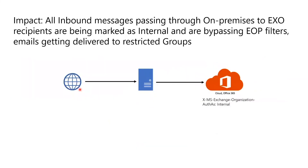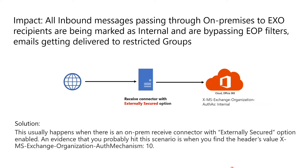Our next problem is inbound email from the internet which is routed through on-prem being treated as internal on Office 365. If you treat email from the internet as internal, it will bypass many Exchange Online Protection filters. If you have restricted groups that accept email only from authenticated users, inbound email from the internet would get delivered to those groups as well. This usually happens when there is an on-prem receive connector with the externally secure option enabled. Normally, if email enters through an externally secured receive connector, we treat that message as internal and from an authenticated source, and the same information will be passed to Office 365 because of the hybrid mail routing. Evidence that you hit this scenario is when you find the auth mechanism header set to 10. To resolve this issue, make sure the on-premise server is not accepting inbound email from the internet through an externally secured receive connector.